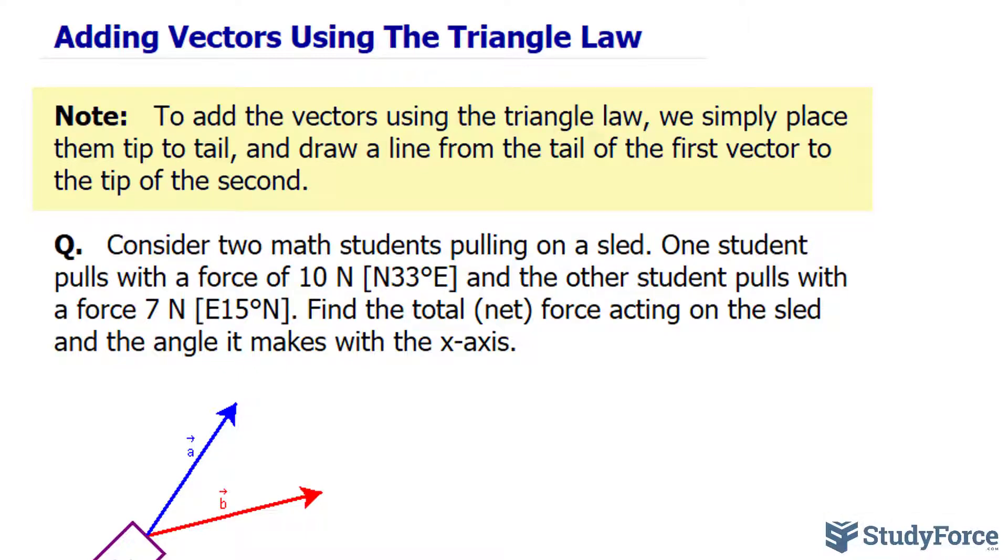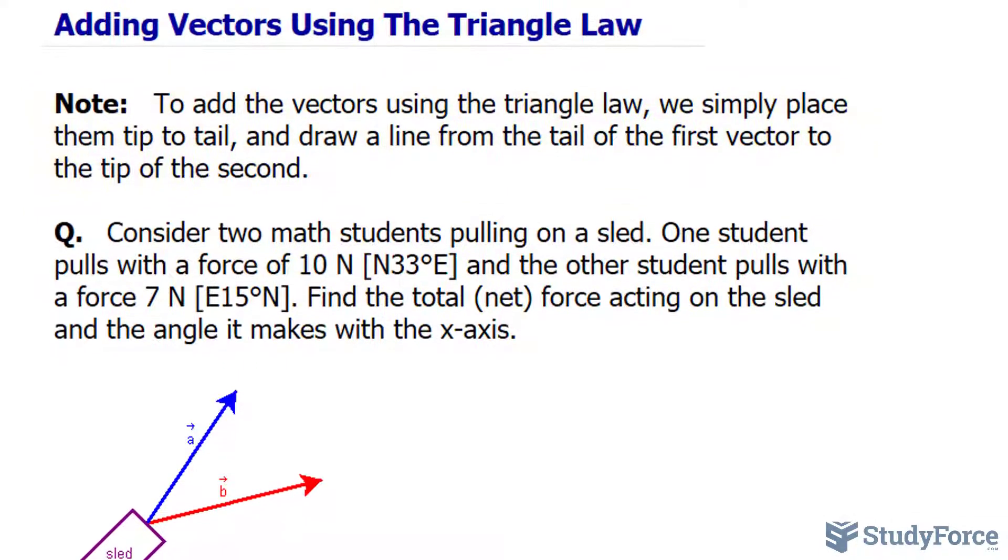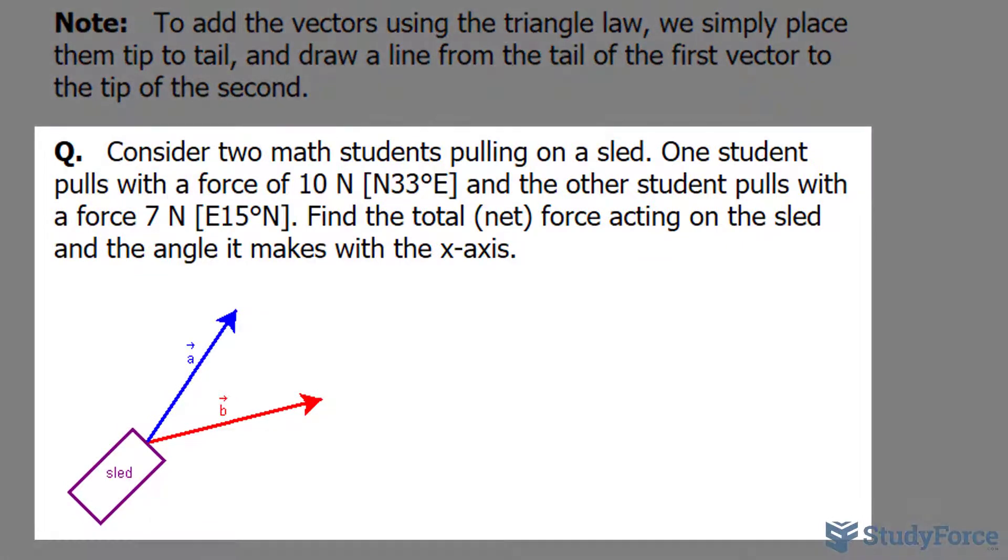Now, if that's confusing to you, I'll show you an illustration using the question underneath, which reads: Consider two math students pulling on a sled. One student pulls with a force of 10 newtons, starting at north, headed 33 degrees towards east. And the other student pulls at a force of 7 newtons, starting east, heading 15 degrees north. Find the total net force acting on the sled and the angle it makes with the x-axis.